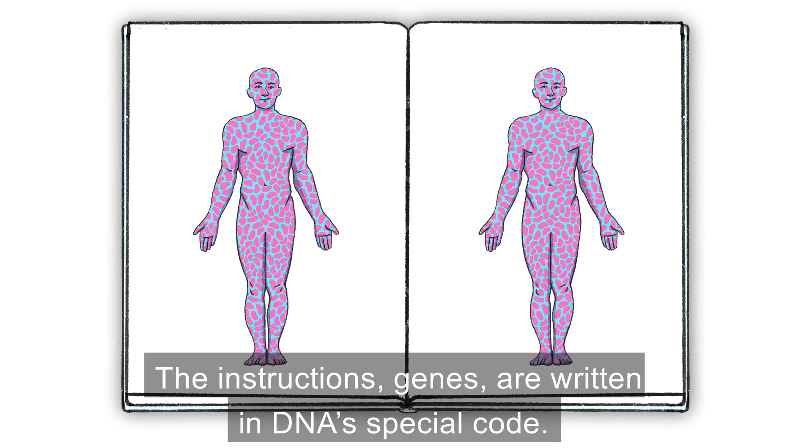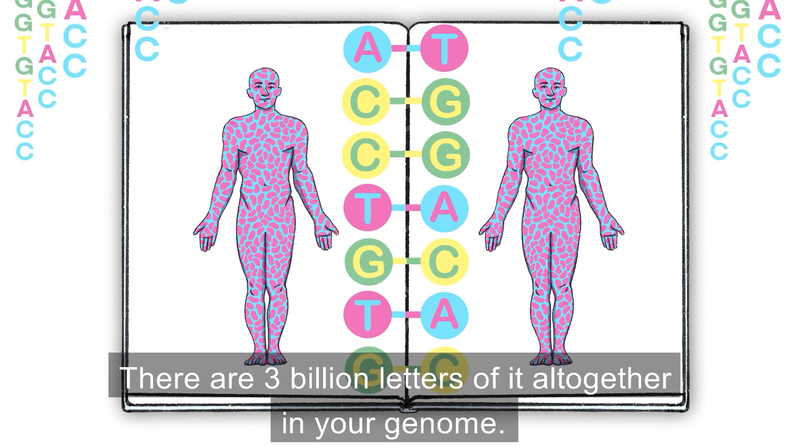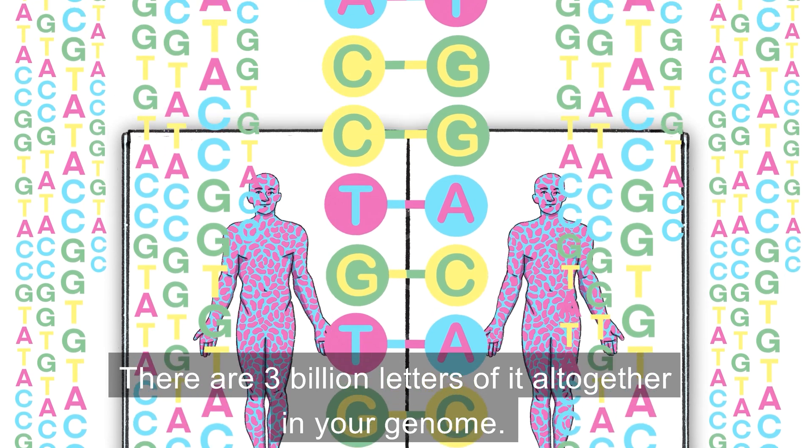The instructions, genes, are written in DNA's special code. There are three billion letters of it all together in your genome.